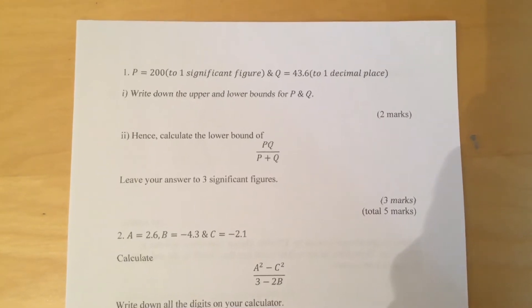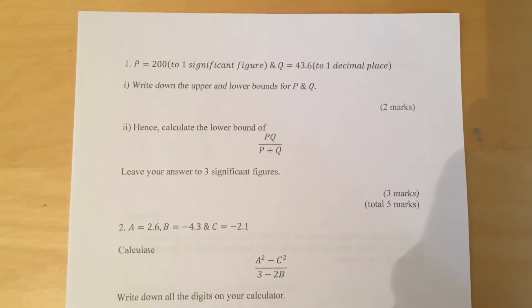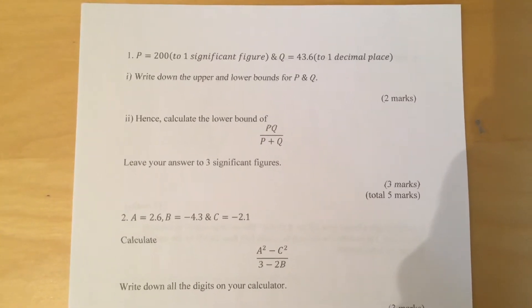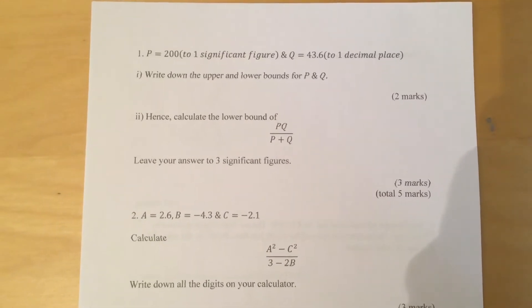Part 1. Write down the upper and lower bounds for P and Q. Part 2. Hence, calculate the lower bound of PQ over P plus Q. Leave your answer to three significant figures.